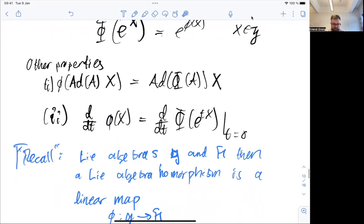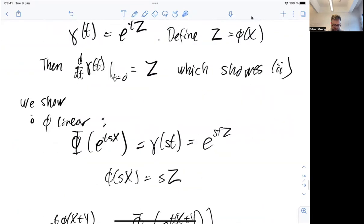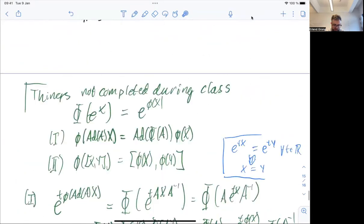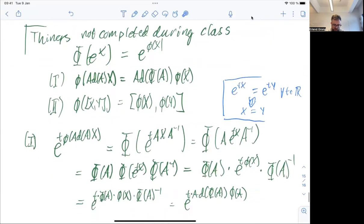And then we did not quite complete the proof last time. So the two relations that we have yet to show is this relation here, that if I apply small phi to the adjoint map of some a, apply to x, then that's the same as applying the large phi to the a, and then phi of x. And I did not show that it's an actually group homomorphism.